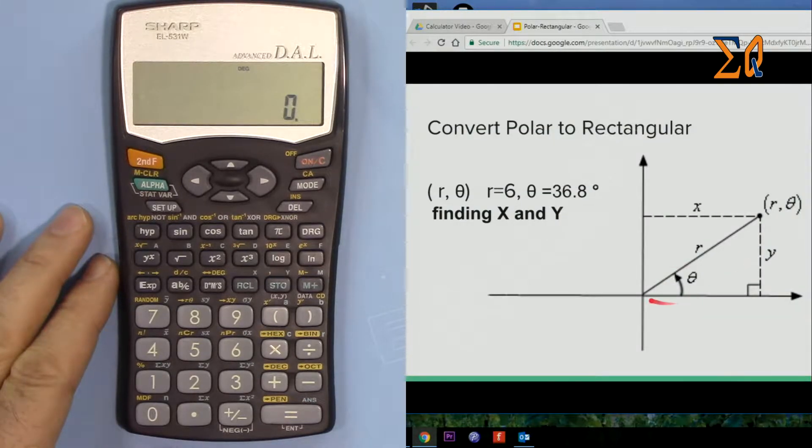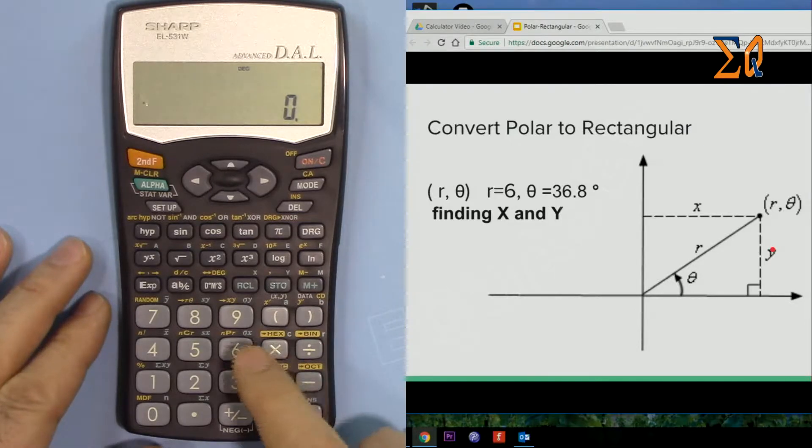Let's say you have the magnitude r equals 6 and theta equals 36.8 degrees, and you want to find out the corresponding X and Y. This X is the length, so we want to find X and then we want to find the length Y which is here.